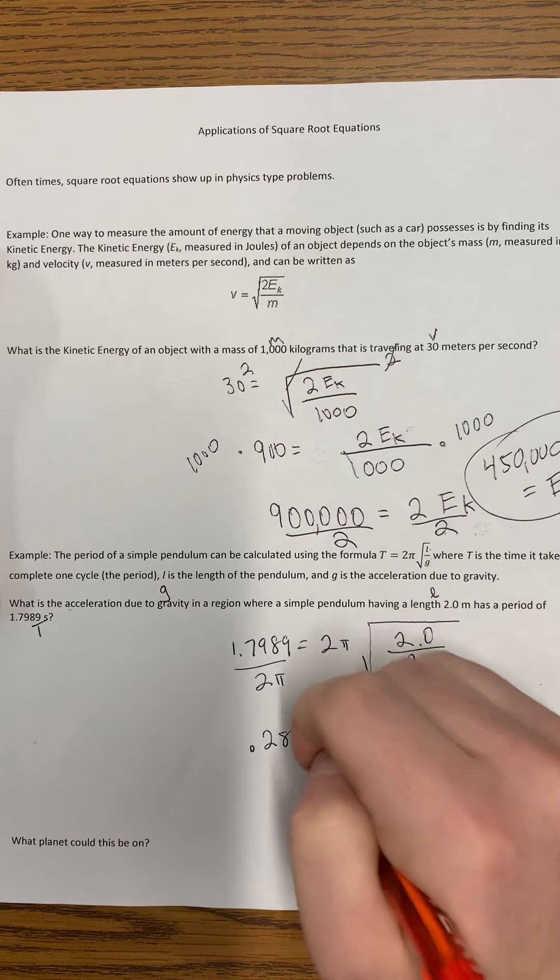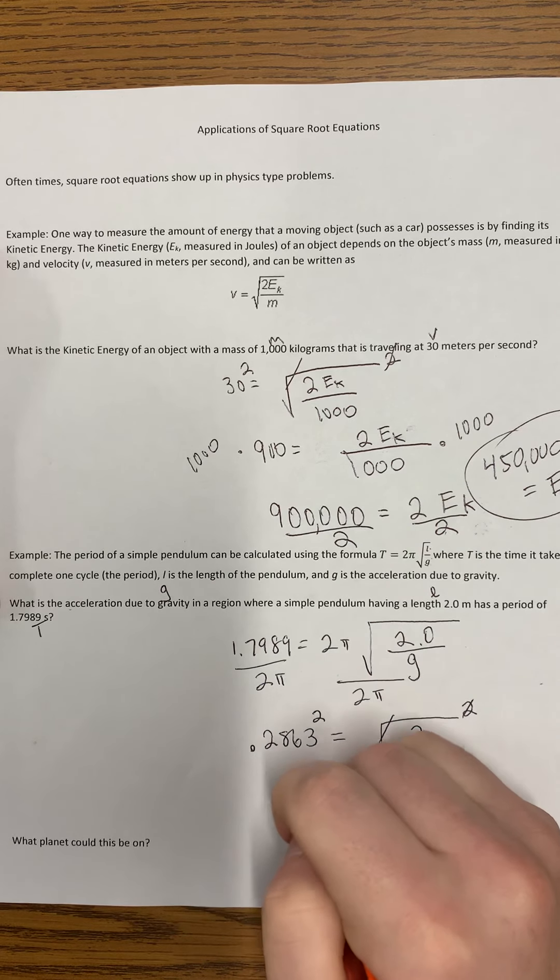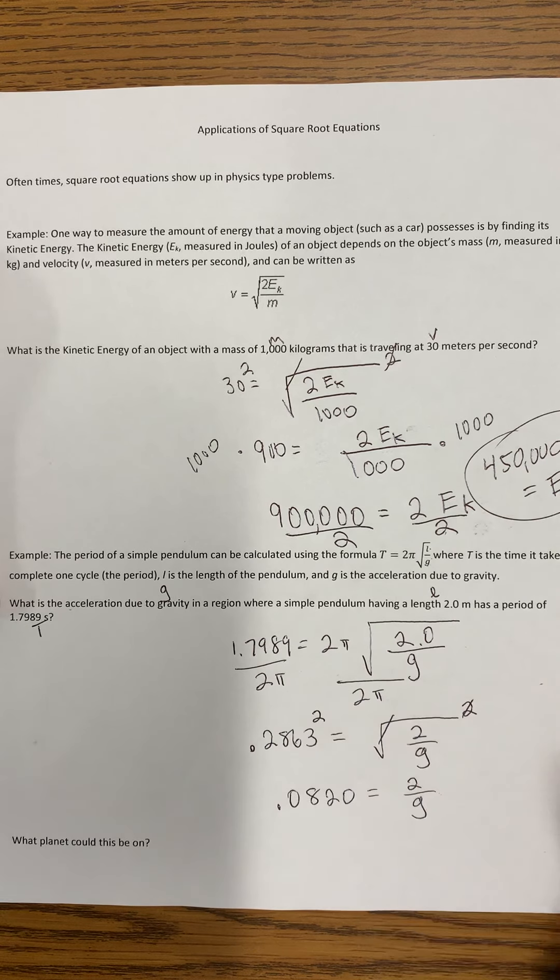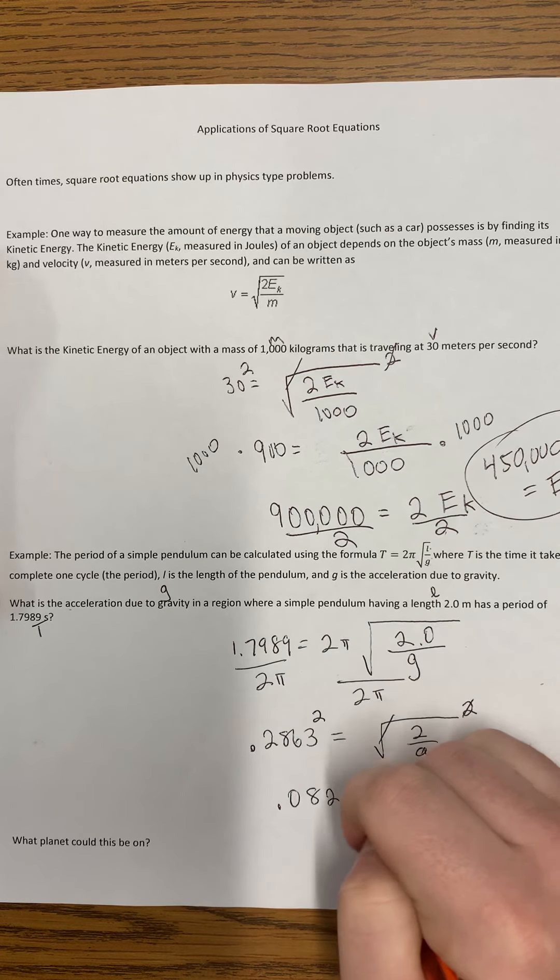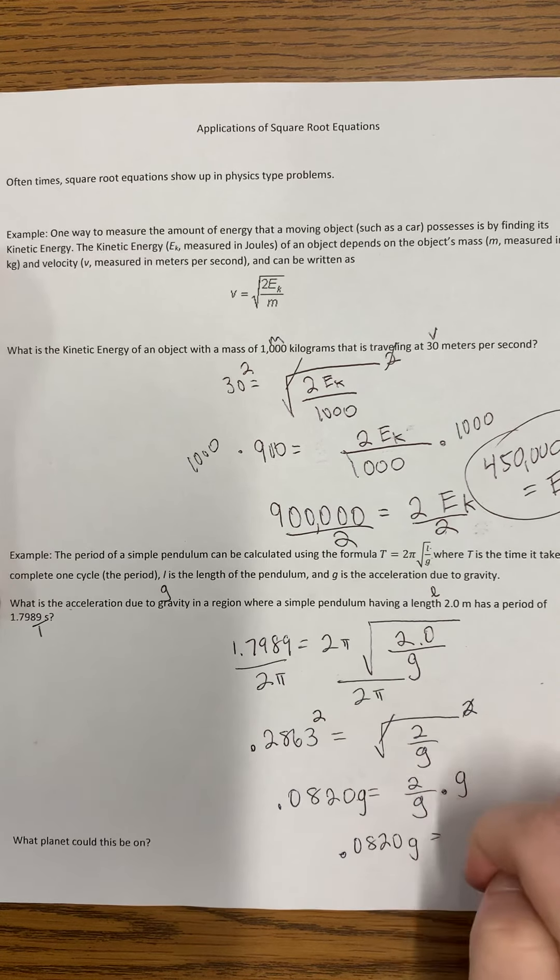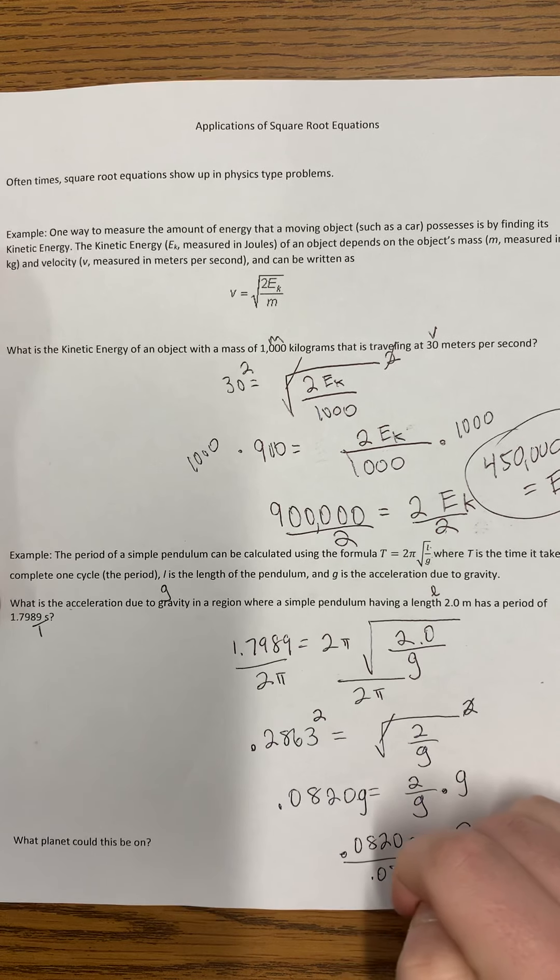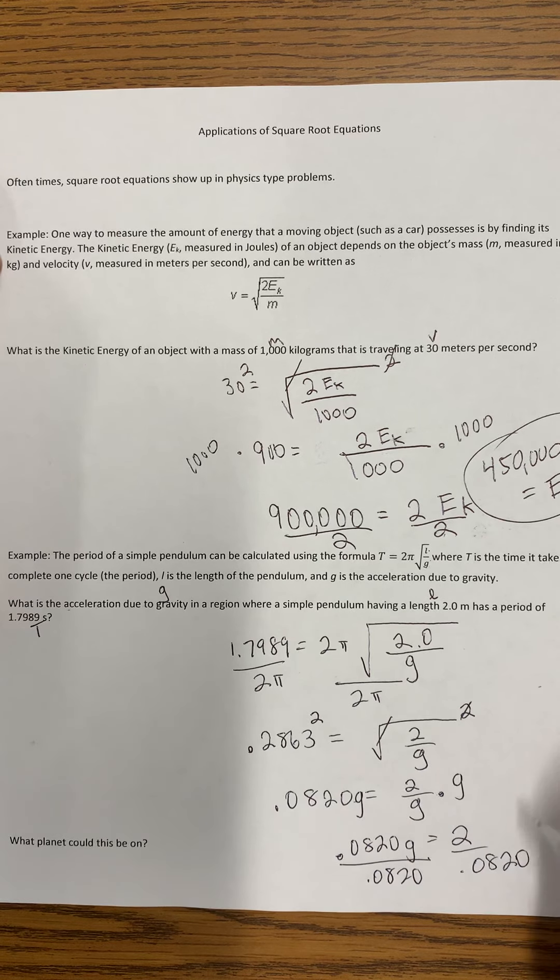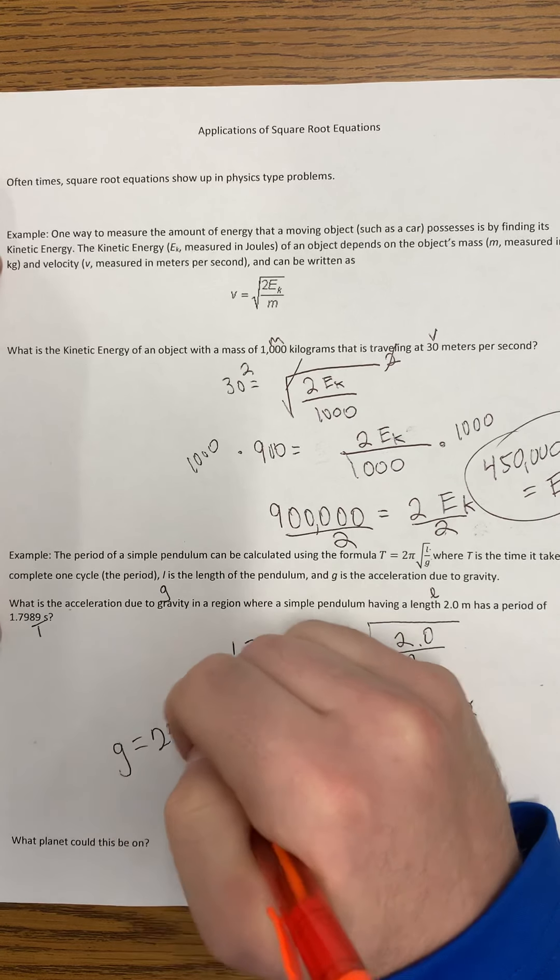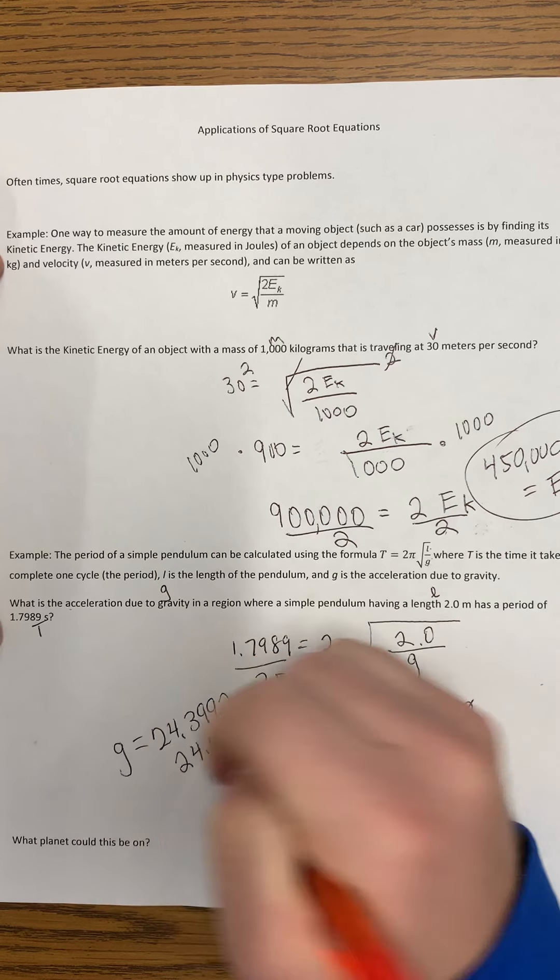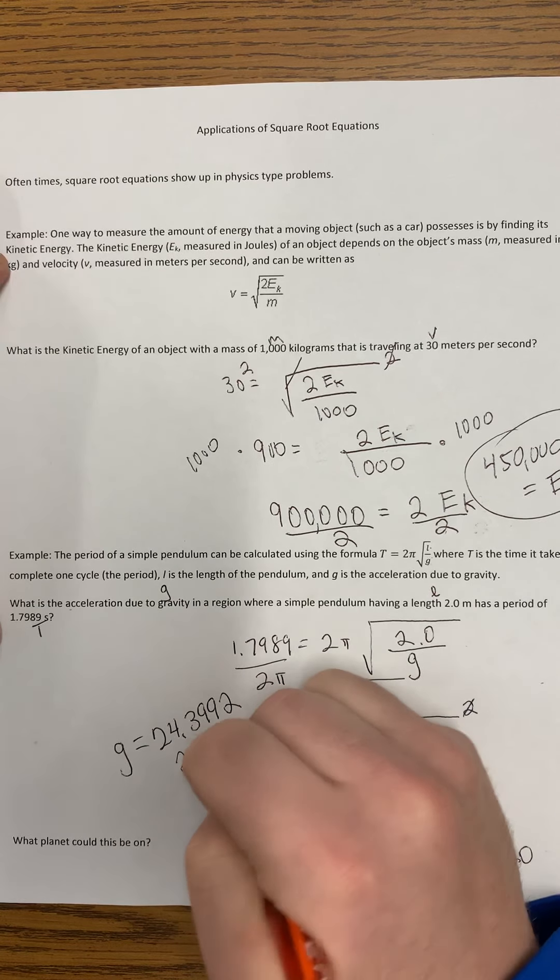We can now square both sides of this equation. Again, rounding to four decimal places leads us to 0.0820 equals 2 over G. We can multiply both sides of the equation by G. We get 0.0820 G equals 2, and we can divide by 0.0820 on both sides. Rounding to two decimal places, we get the gravitational pull is approximately equal to 24.4 meters per second squared.